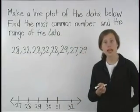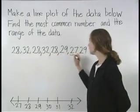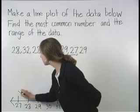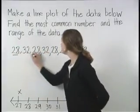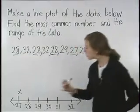Now, notice that there is one 27 in our data set, so we put one x above 27. Next, there are one, two, three 29s in our data set, so we put two x's above 29.